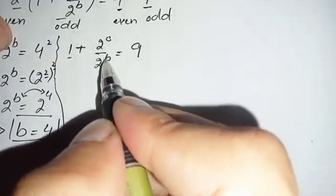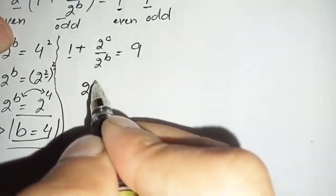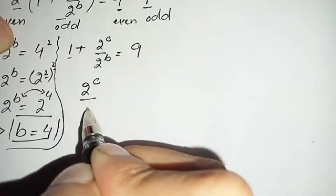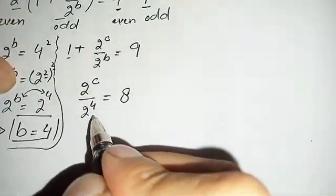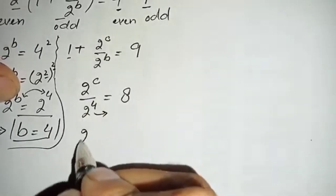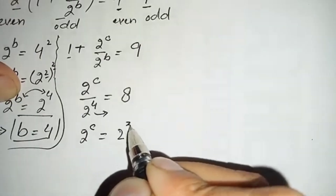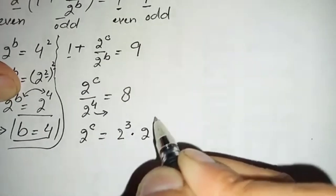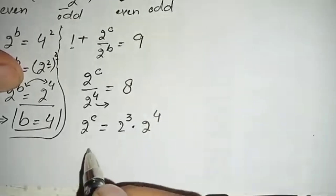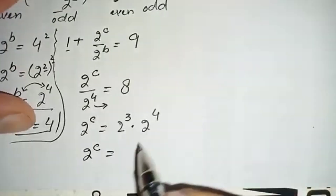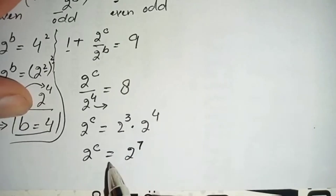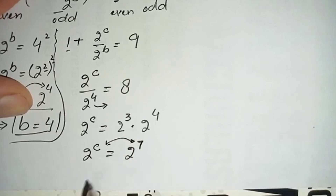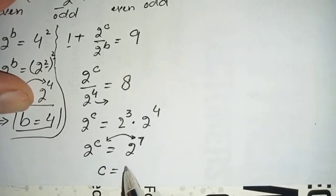Now we solve the second new equation for c: 1 plus 2 raised to power c divided by 2 raised to power b equals 9. Moving 1 to the right hand side and substituting b equals 4, this becomes 2 raised to power c divided by 2 raised to power 4 equals 8. Moving 2 raised to power 4 to the right hand side: 2 raised to power c equals 8 times 2 raised to power 4. Writing 8 as 2 raised to power 3, we get 2 raised to power c equals 2 raised to power 3 times 2 raised to power 4 equals 2 raised to power 7. Comparing powers gives c equals 7.